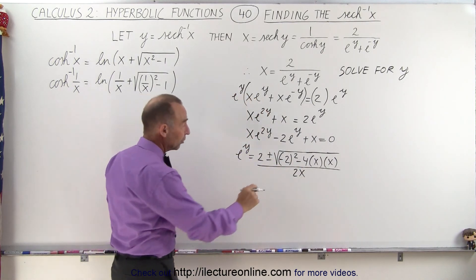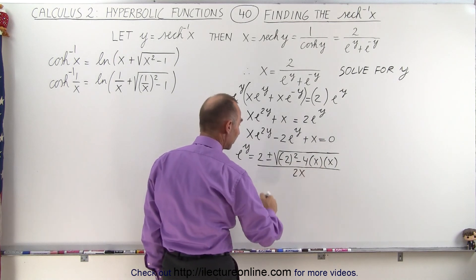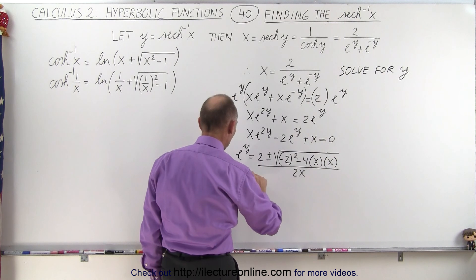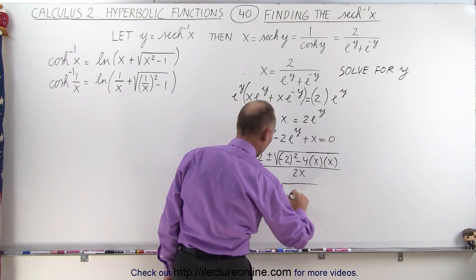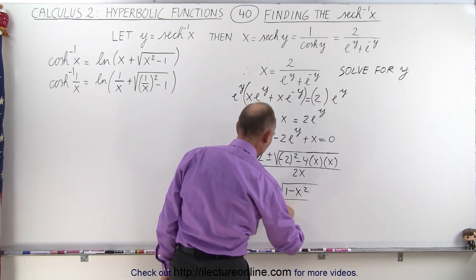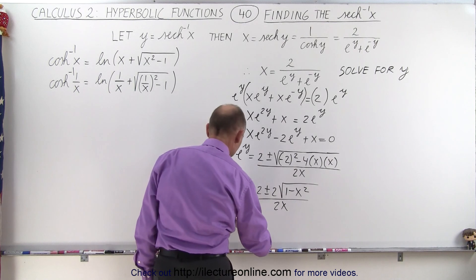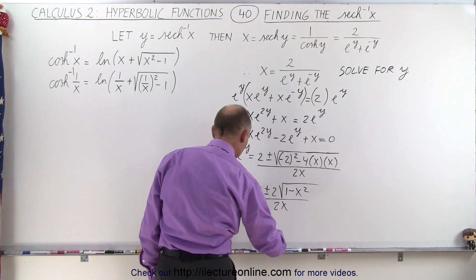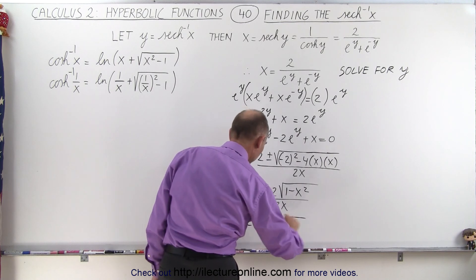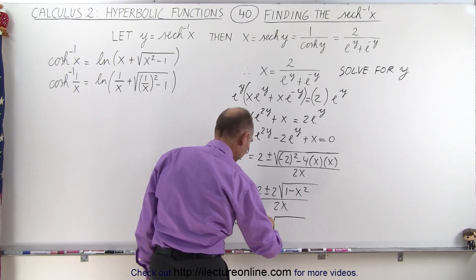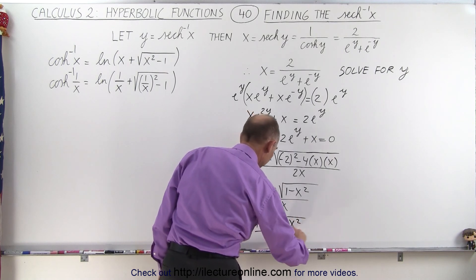When we square the middle term we get 4, so we have 4 and a 4 there. We can factor out a 4, so that becomes E to the Y is equal to 2 plus or minus 2 times the square root of 1 minus X squared, all divided by 2X. Then dividing by 2, we get E to the Y is equal to 1 plus or minus the square root of 1 minus X squared, divided by X.